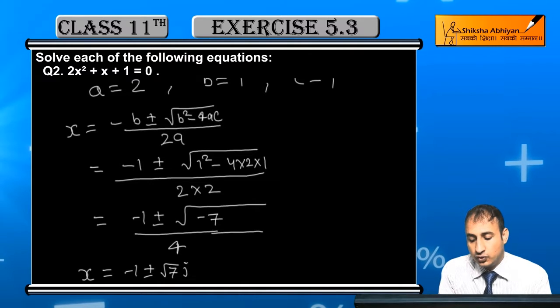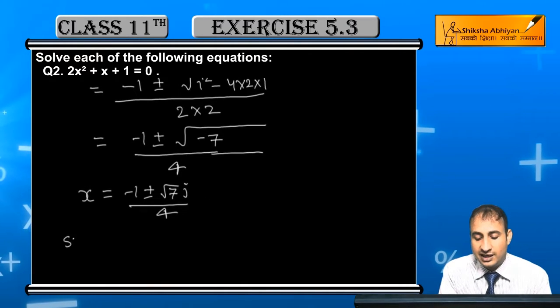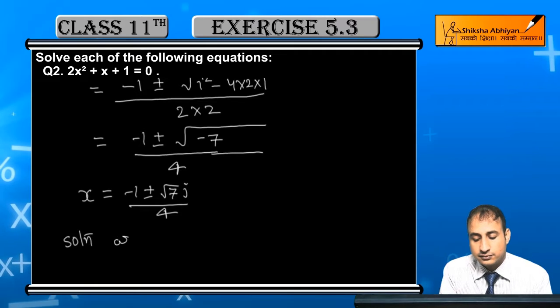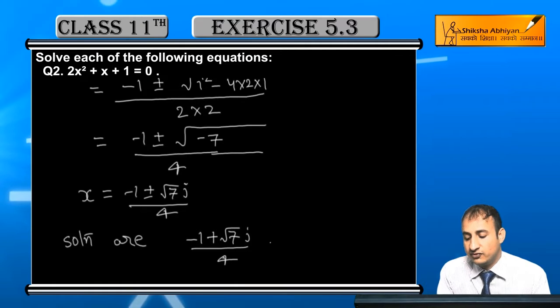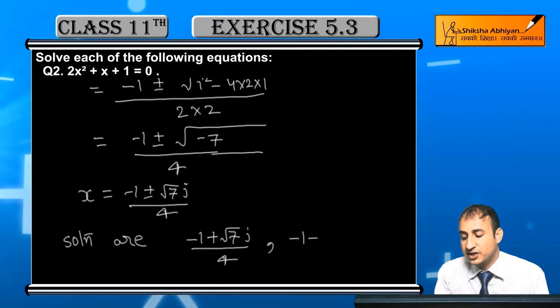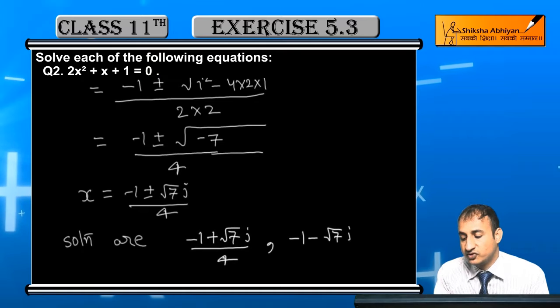So you get two values of x. The solutions are: x = (-1 + √7i)/4 and x = (-1 - √7i)/4.